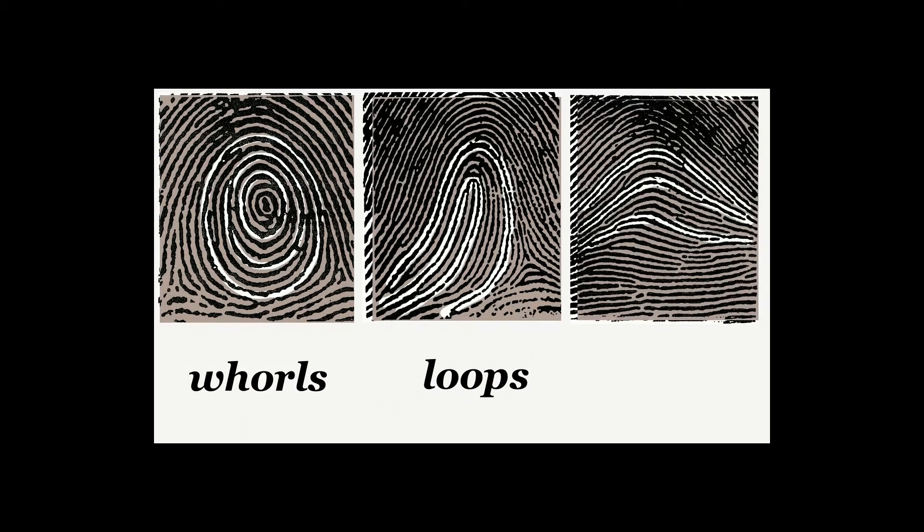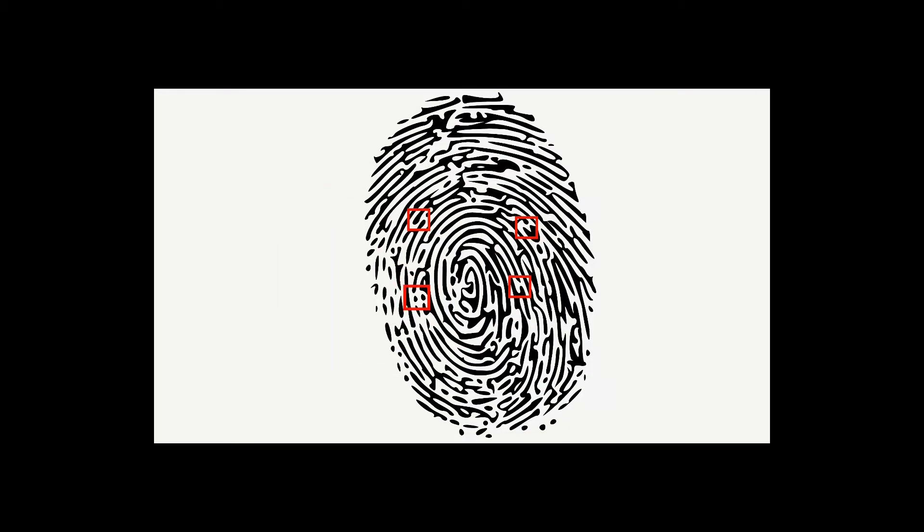So what went wrong? Fingerprint analysis works on the assumption that everyone's fingerprints are unique. But how do scientists measure this uniqueness? Forensic scientists examine features called whorls, loops, and arches. Matches are not made on the whole fingerprint but by comparing individual features. How many features does an analyst need to examine before declaring a match? The answer is: it depends. In the USA, there is no rule about the minimum number of matching features needed.